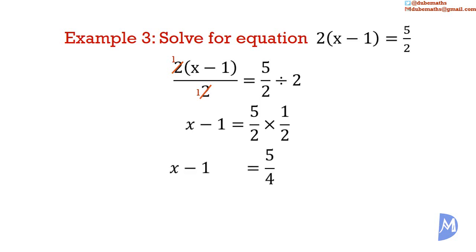And remove the negative 1 from the left-hand side by adding 1 to both sides. Negative 1 added to positive 1 is equal to 0. Remain with x on the left-hand side. And 5 over 4 added to 1. Remember 1 is the same as 4 over 4. So 5 over 4 added to 4 over 4 gives 9 over 4. x is equal to 9 over 4.